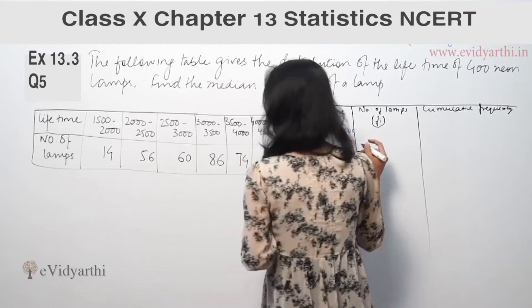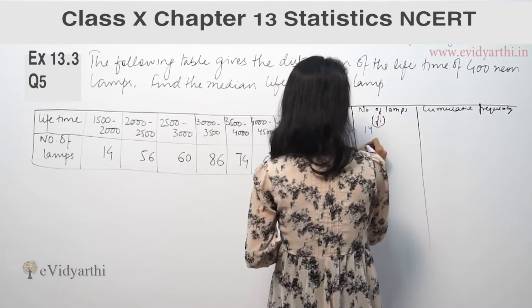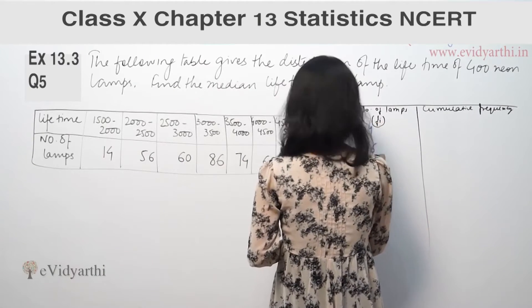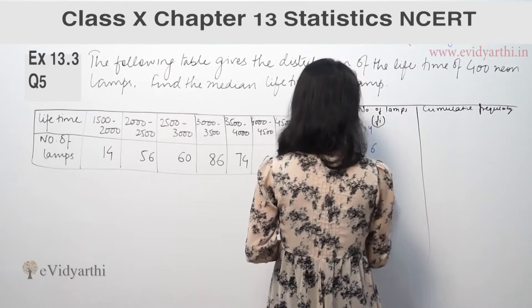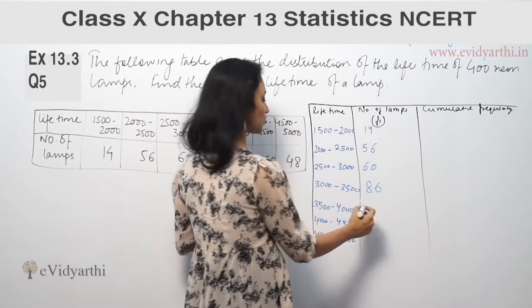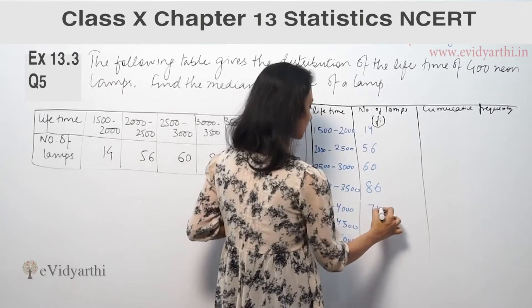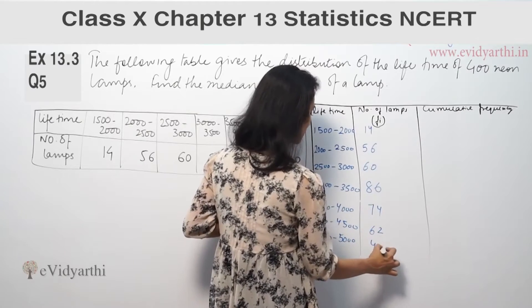Now the frequency values are: 14, 56, 60, 86, 74, 62, and 48.